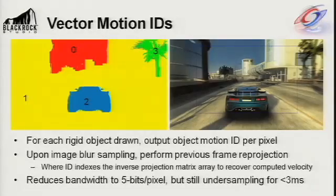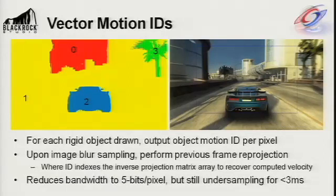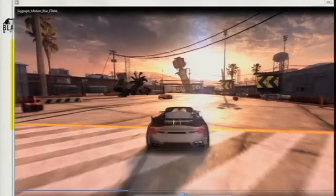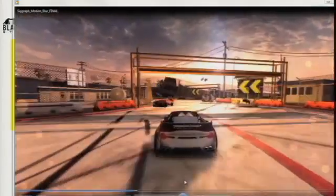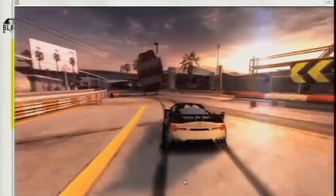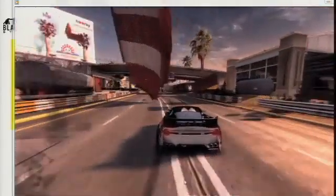We introduce the idea of vector motion IDs, where we assign one ID to each distinct rigid motion in the scene — the car, the environment, and the sky backdrop, for example, are each assigned IDs. Upon sampling the ID buffer, we project the previous frame's position where the ID indexes an array of inverse reprojection matrices. In the video, with a collision, multiple velocities are in play, and we can see each object assigned a separate ID, recovering nice motions for the complexities of the scene.